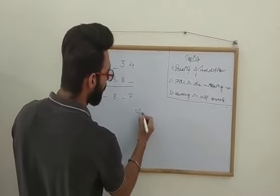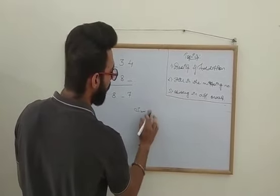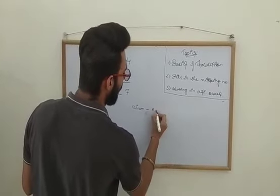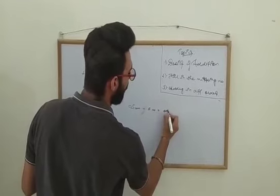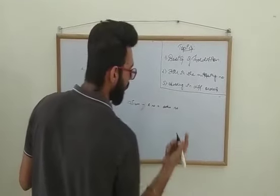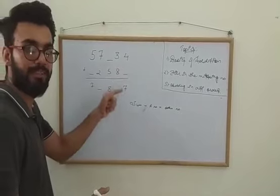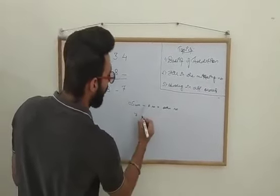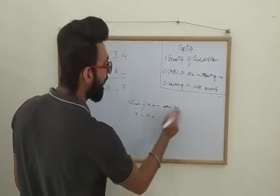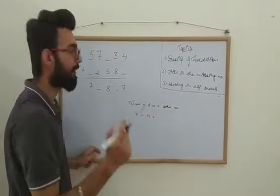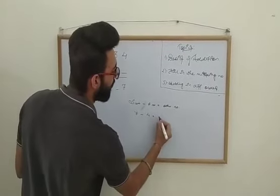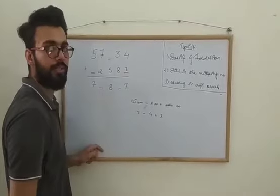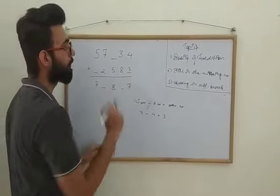While we add, sum minus a number equals the other number. Which means sum is the given answer, 7 is here. So 7 minus the other number, that is 4, gives the other number which is missing. So the number which is missing is 7 minus 4 equals 3. So we will enter 3 here. It is 4 plus 3 equals 7.